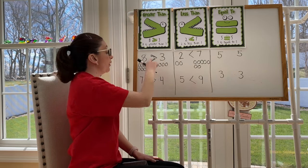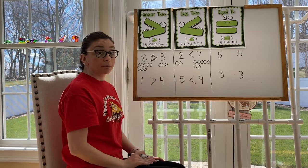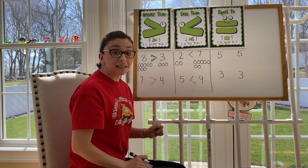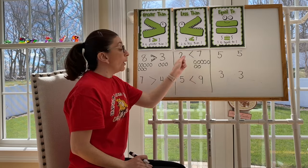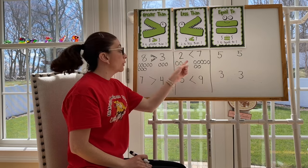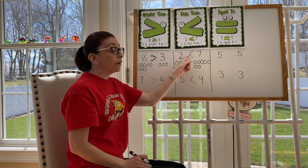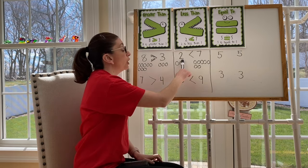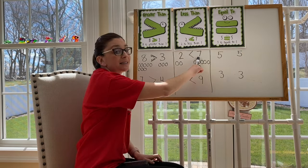The bigger part of my arrow faces the bigger number. When we talk about less than, that pointy part of the arrow faces the smaller number. So the smallest part of the arrow faces the smaller number. Two is less than seven. Five is less than nine.